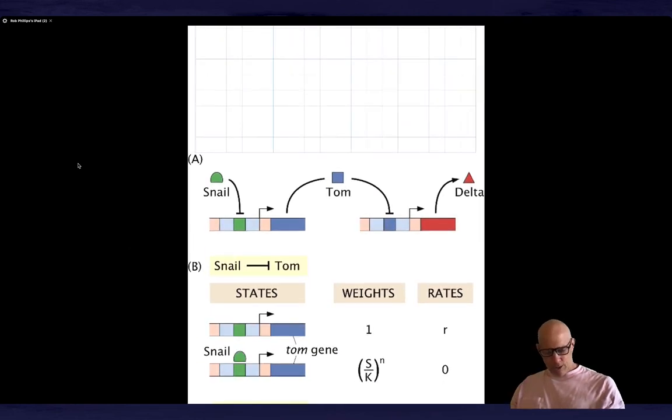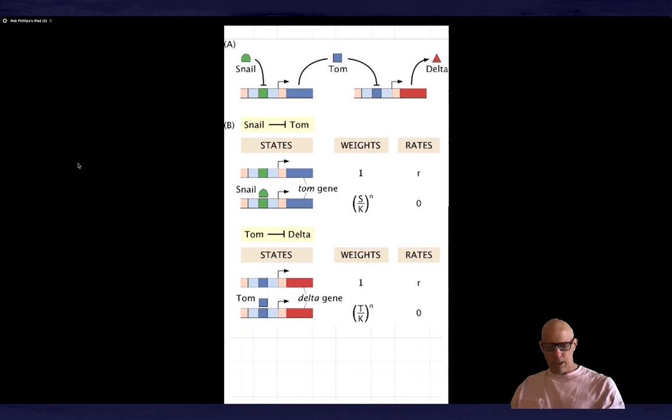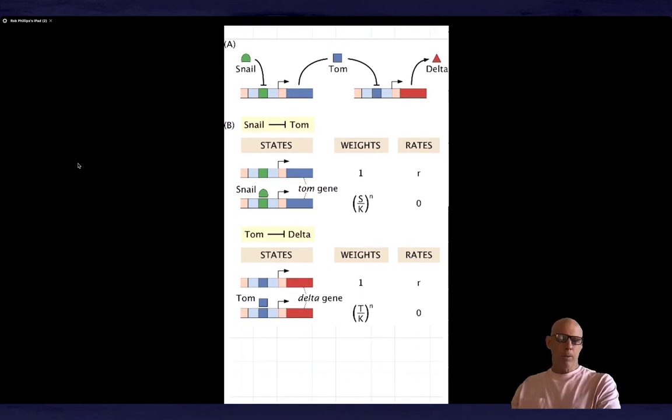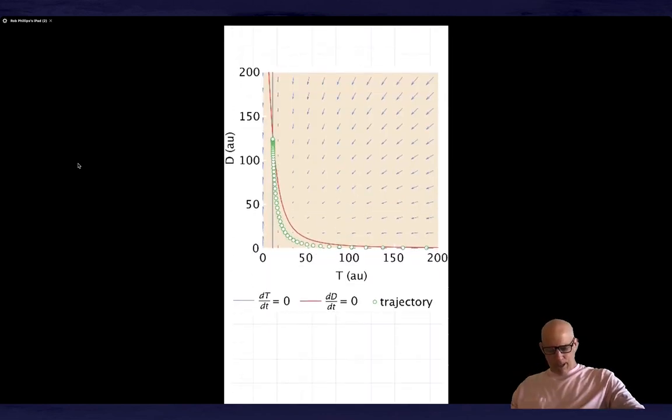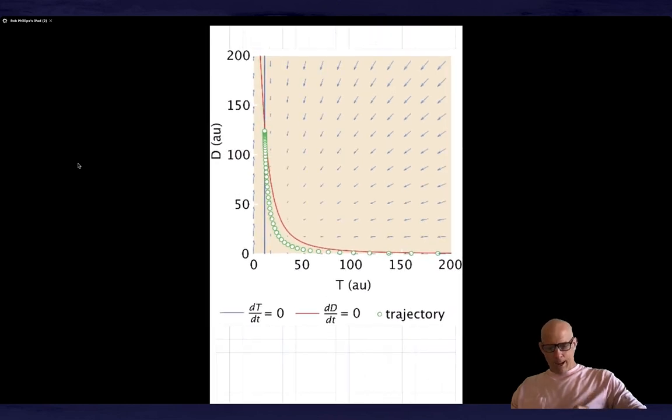Here I show you - this is strictly if you want to do this by yourself. Let me just pause for a moment and let you look at the states and weights. You can see that snail is a repressor of tom, and then tom is a repressor of delta because of the rate of production there. You can already anticipate how this is going to work. We will have two coupled equations for tom and for delta. We can plot the nullclines as you see here. This is the fixed point up here, and this is a particular trajectory for one particular instance of the initial conditions.